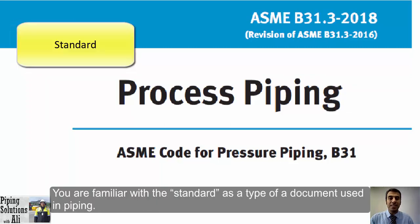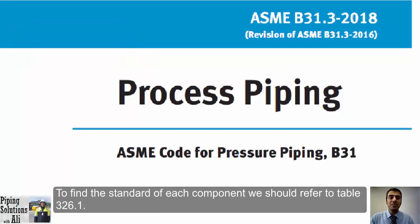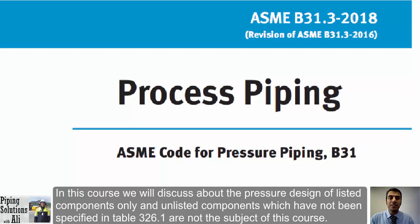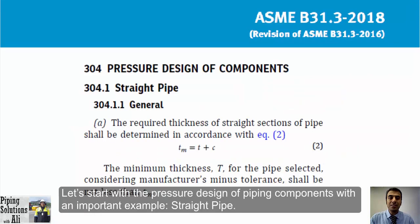To find the standard for each component, we should refer to Table 326.1. In this course we will discuss the pressure design of listed components only. Unlisted components, which have not been specified in Table 326.1, are not the subject of this course.